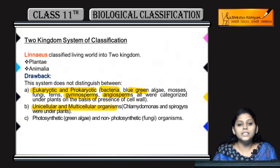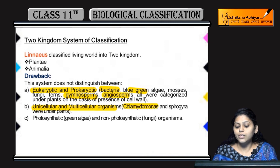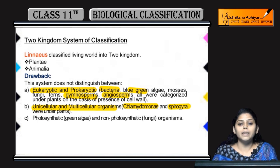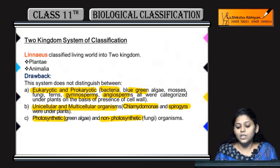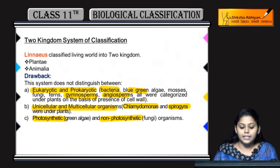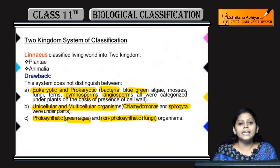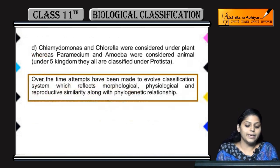Waise hi, kuch unicellular aur multicellular organisms ko bhi yeh differentiate nahin kar paya. For example, Chlamydomonas aur Spirogyra ko under plant kingdom mein rakha — inmein se kuch unicellular hain aur kuch multicellular. Kuch photosynthetic organisms the aur kuch non-photosynthetic — photosynthetic mein algae the aur non-photosynthetic mein fungi — inhe bhi alag-alag category mein nahin rakh paye.